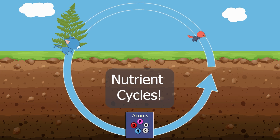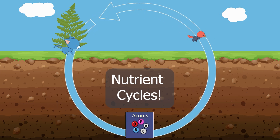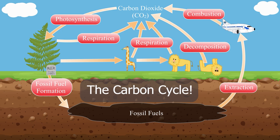This recycling of matter is known as a nutrient cycle, and there are several different nutrient cycles for different elements. Today, we will focus on the carbon cycle, the process by which the element carbon moves around in ecosystems.